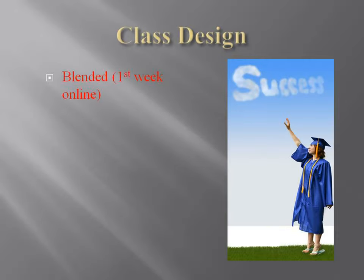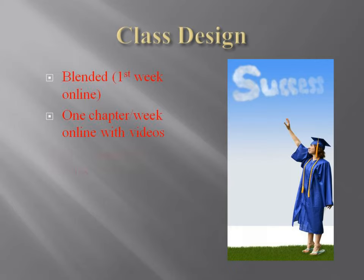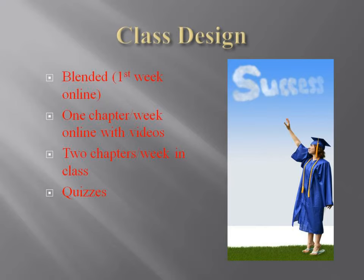Our class design is blended. We're online the first week. Every time we're online, you'll have one chapter per week to read and there'll be accompanying videos. When we're in class, since we'll be together, we'll go through two chapters. That gets us all the way through the book by week eight, so that weeks nine and ten you can finish your writing and presentation. There's going to be 25-point quizzes for every chapter for eight weeks. There will not be any quizzes in weeks nine or ten. Discussion threads and journaling are also required.